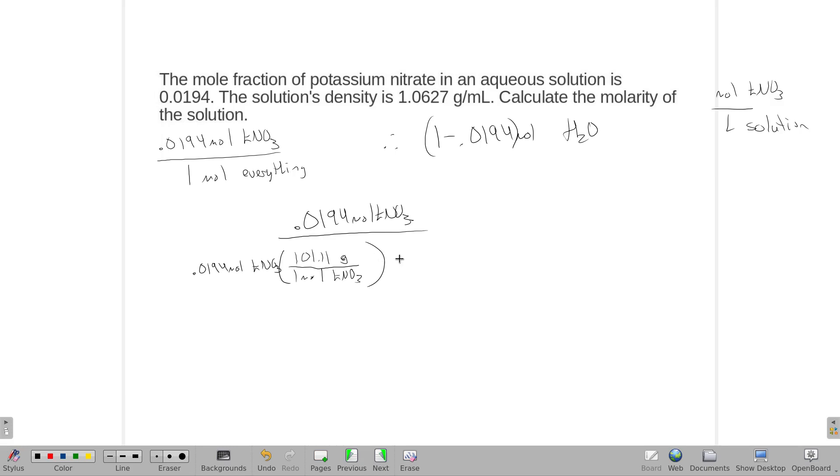That'll be the mass of just the KNO3. I also need the mass of water. I'm just going to write this as 1 minus the 0.0194. And then one mole of water is 18.016 grams. These two together will be our mass of that solution.